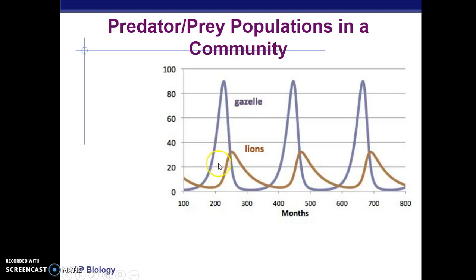But then when the amount of lions spikes, the amount of gazelles goes down. There's a delayed effect between the spiking of the gazelles and the spiking of the lions — a delay in time. And this cycle continues.